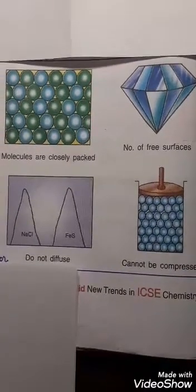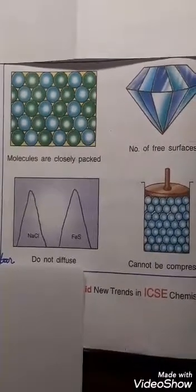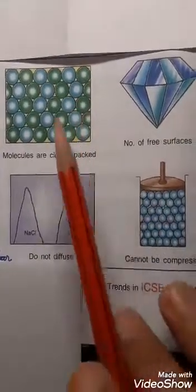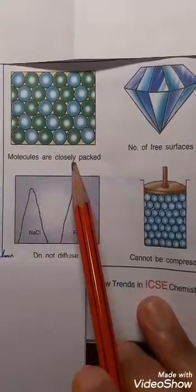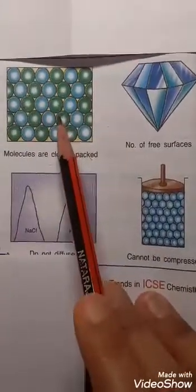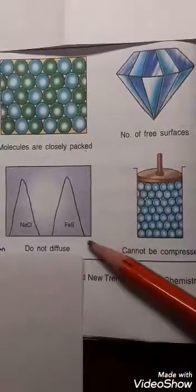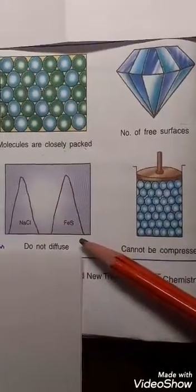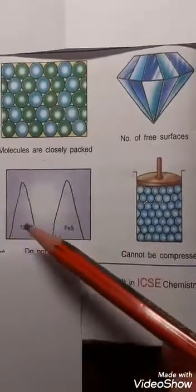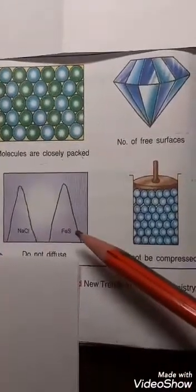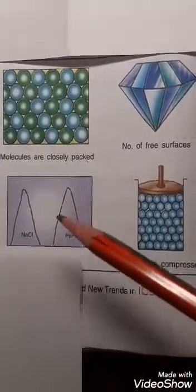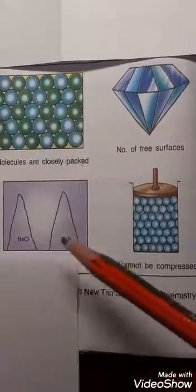Let us understand the properties of solids by looking at these diagrams. The molecules present in solids are closely packed due to the maximum force of attraction. Solids do not diffuse — they do not mix up. For example, NaCl (sodium chloride) and iron sulfide are both solids and they will not mix with each other to form one even mixture.